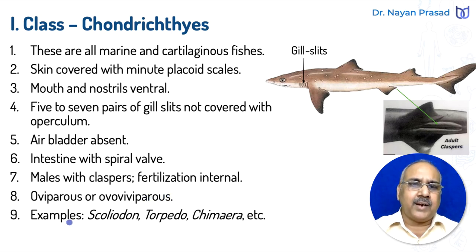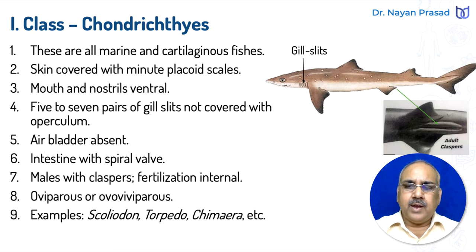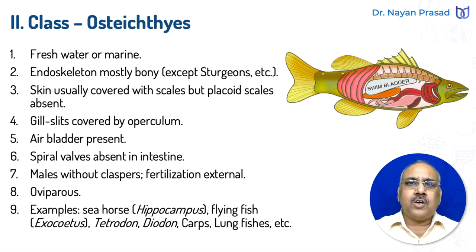Examples of cartilaginous fishes are Scoliodon, Torpedo, Chimera, etc. Next is class Osteichthyes.